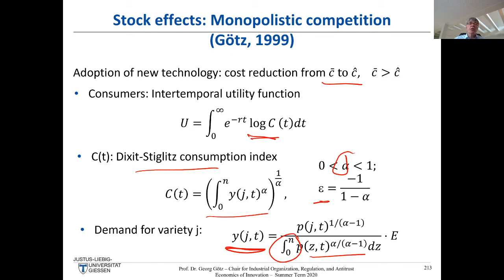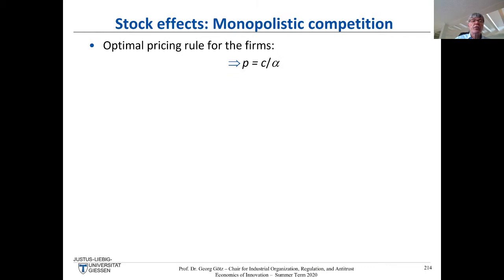This is a so-called isoelastic demand function where the price elasticity of demand equals -1/(1-α). If α = 1/2, the elasticity is 2. Applying the Robinson–Lerner pricing rule (mark-up pricing), price equals C/α — so with α = 1/2, price is twice cost, giving a 100% mark-up. This simplicity allows you to write down a very clean profit function.